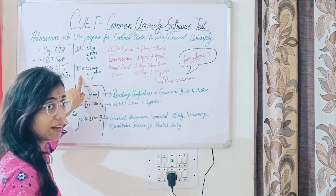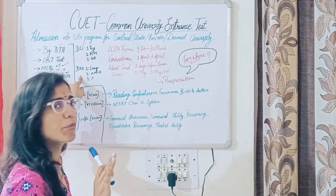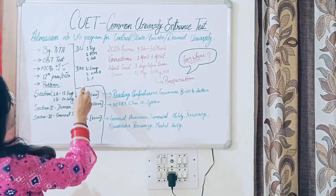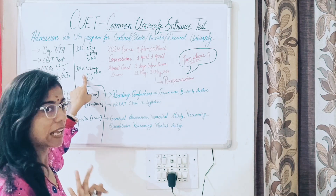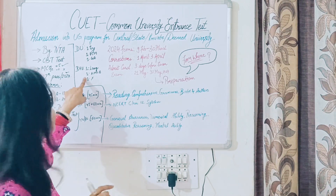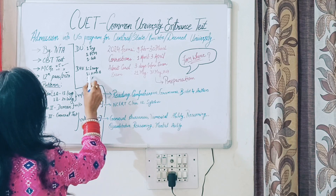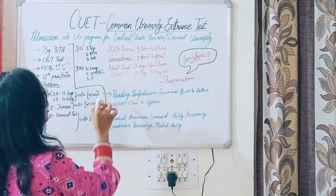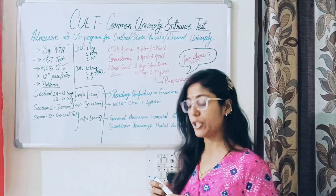B.H.U. ne general aptitude test ko optional kar diya hai — aap general aptitude test ka exam de ya na de, aapki choice hai. Dono theek hai. Section 1 mein language aati hai, koi bhi ek language le sakte ho, English hi lena compulsory nahi hai. Domain waale Section 2 mein B.H.U. ne kaha ki aap Physics, Chemistry, Maths, Computer ya Biology lete ho toh bhi chalega. Har ek university ka CUET conduct karne ka apna pattern hota hai.